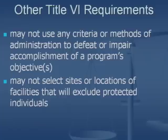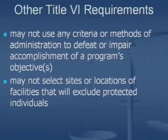Disparate impact discrimination falls under two areas. First, an entity may not use any criteria or methods of administration that defeat or impair the accomplishment of a program's objectives — meaning you can't have policies or practices that have the effect of discriminating against someone, even if neutral on their face. Also, programs receiving federal assistance cannot select sites or locations that will exclude protected individuals. For example, moving a program serving limited English proficient persons from an urban area to a suburban area with limited public transportation can constitute a violation of Title VI.